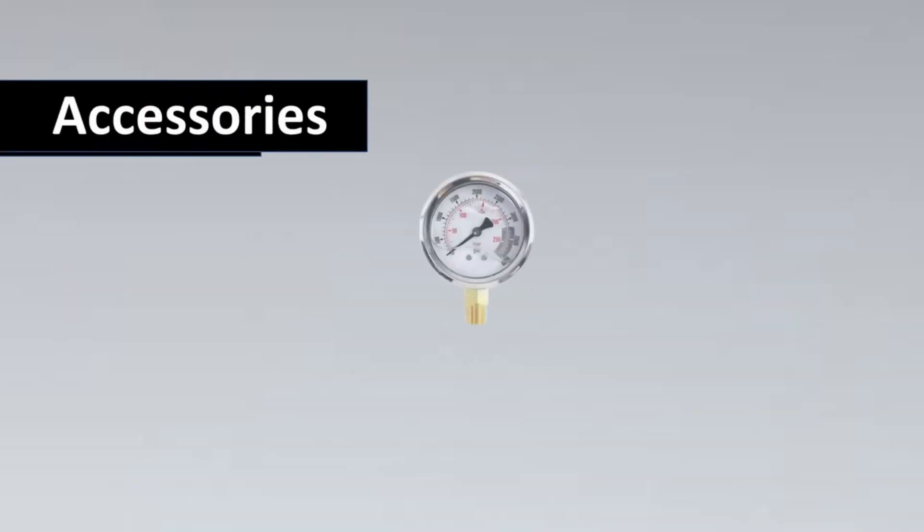The second thing is the accessories. For example, for a pressure gauge you might require something like a siphon, or you might require a snubber which is used if there is pulsating discharge happening in the line, like in the discharge of the pump. Or in a control valve you might require a gauge. It depends on instrument to instrument what accessories would be required.